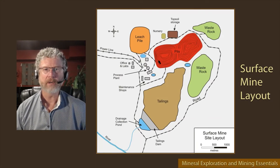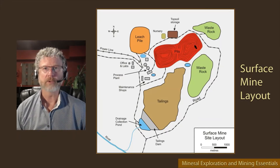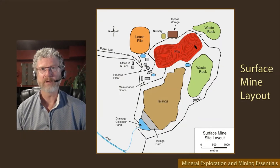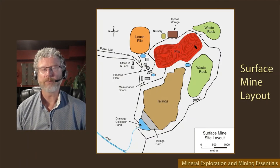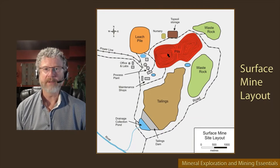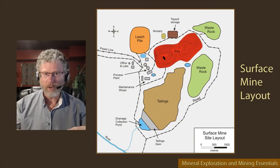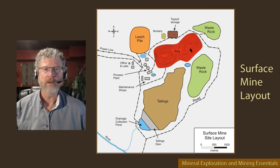The first thing drawn here are the open pits. In this example I've drawn two different pits — there might be one, two, three, or four depending on the nature of the mineral deposits. These would be the initial pits focused right on the ore, and as you get deeper the pits are likely to merge into one larger pit.